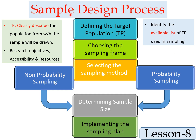Let's move to the Sample Design Process. The first step is defining the target population — clearly describing the population from which the sample will be drawn. When defining the target population, we have to consider several factors like research objectives, the accessibility of the data, and the resources that we have.